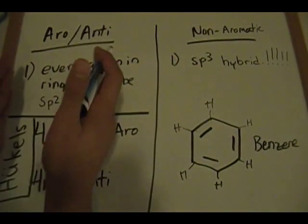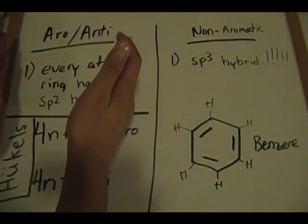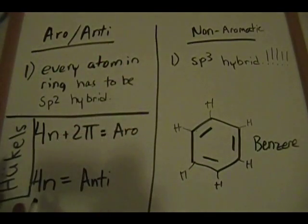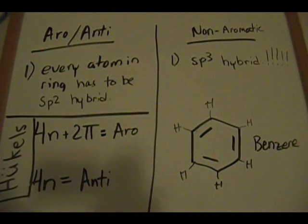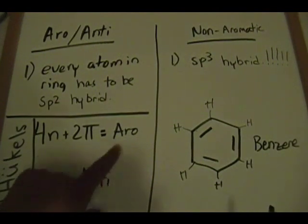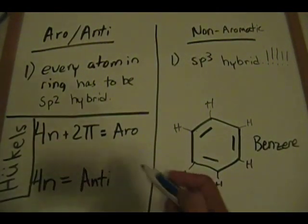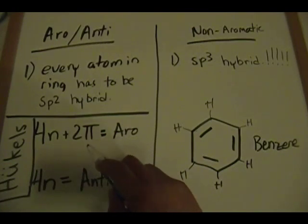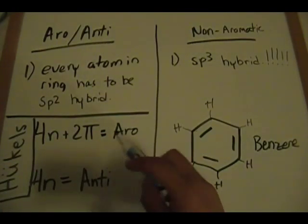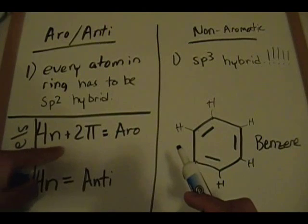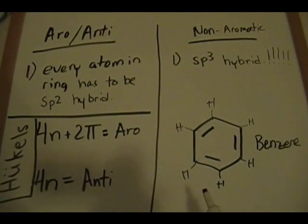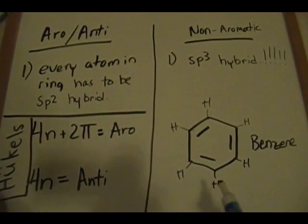We move to the aromatic or anti-aromatic category. There are three labels you can assign a molecule: non-aromatic, anti-aromatic, or aromatic. If it's aromatic, it will follow Hückel's rule: 4n + 2 pi electrons. So once you determine everything is sp2 hybridized, you move on and try to figure out whether it falls under aromatic or anti-aromatic.